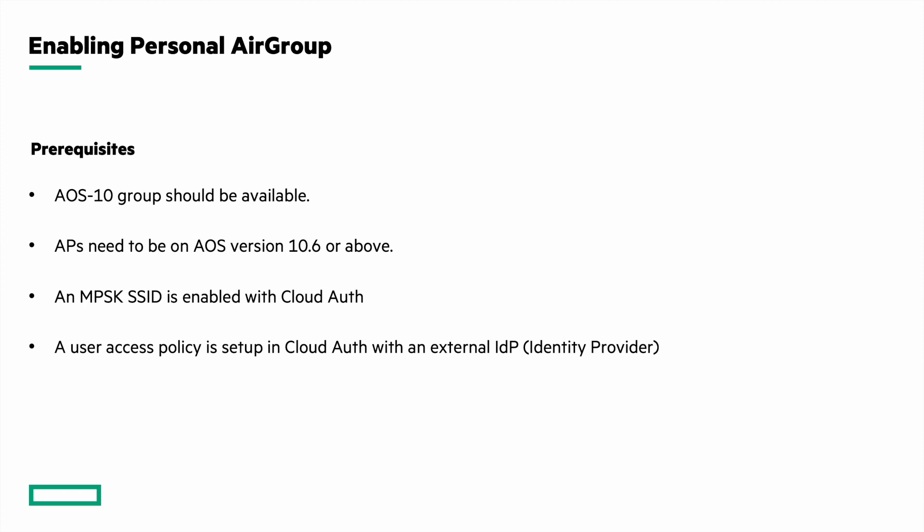Let's look at the prerequisites before enabling personal device visibility and sharing. We need an AOS 10 group with APs on AOS version 10.6 or above. For device sharing, we need an MPSK SSID enabled with CloudAuth. A user access policy needs to be set up in CloudAuth with an external identity provider like Google Workspace, Microsoft EntraID, or Okta Workforce Identity. In the current phase, only MPSK SSID device owners can share their devices, and Aruba CloudAuth serves as the supported authentication server.